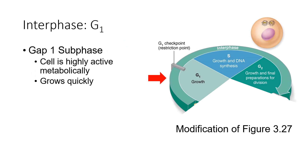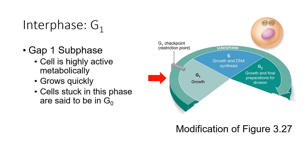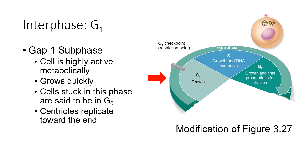The G1 subphase, or GAP1 subphase, directly follows the formation of the cell by mitosis. During this subphase, the cell is very active metabolically and growing very quickly. This phase can last from minutes to hours to years, depending on the cell. The cell is not really preparing for cell division — in fact, cells that will never divide are said to be stuck in this phase, in the G0 phase. However, if a cell is going to go on to divide and get past the restriction point toward the end of this phase, the centrioles replicate. The centrioles, shown here, are organelles that later play a very critical role in mitosis and cell division.